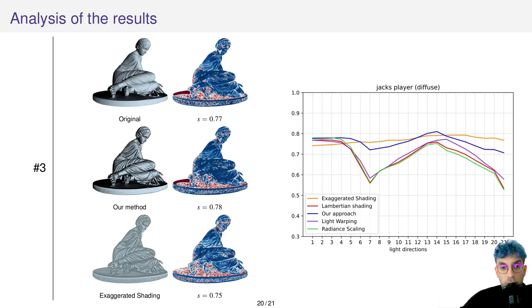On this plot, you can see our score S computed using different directions of light on the x-axis for different techniques. Our technique is displayed in blue, exaggerated shading is displayed in orange, and the original shading is displayed in red. Notice that local light alignment outperforms most of the previous work techniques, with the exception of exaggerated shading in some cases, particularly at light number 7.